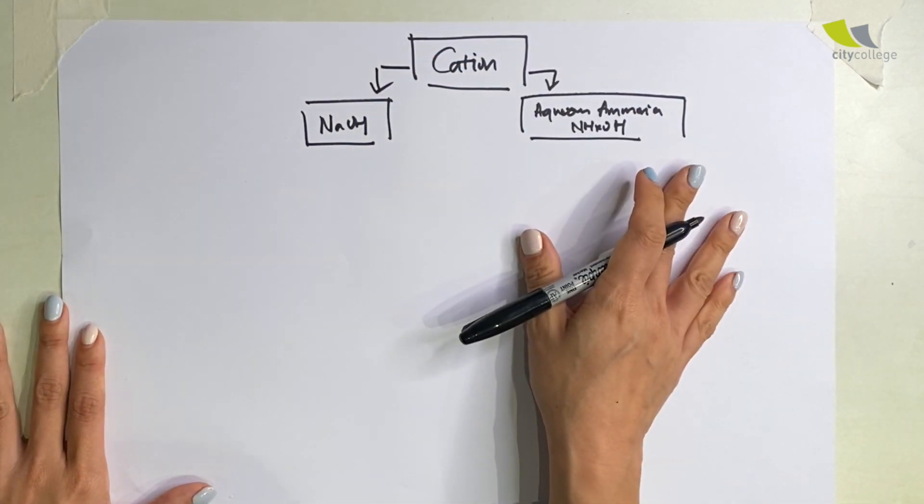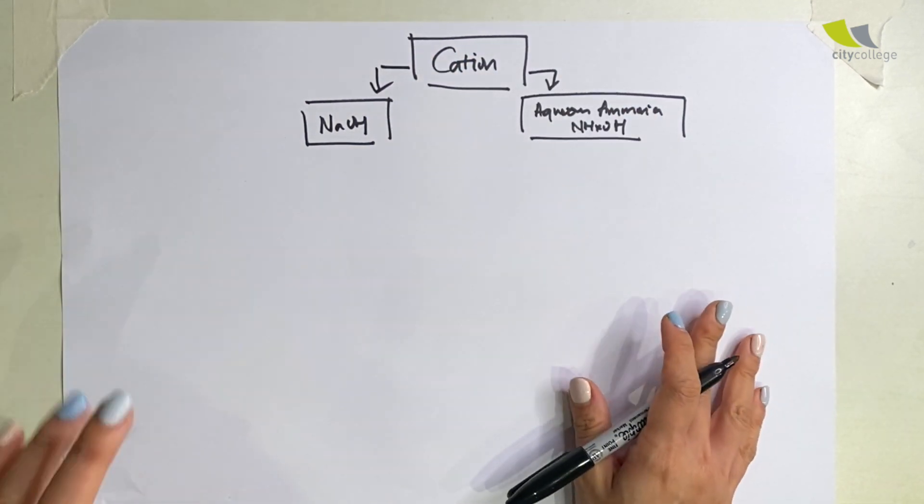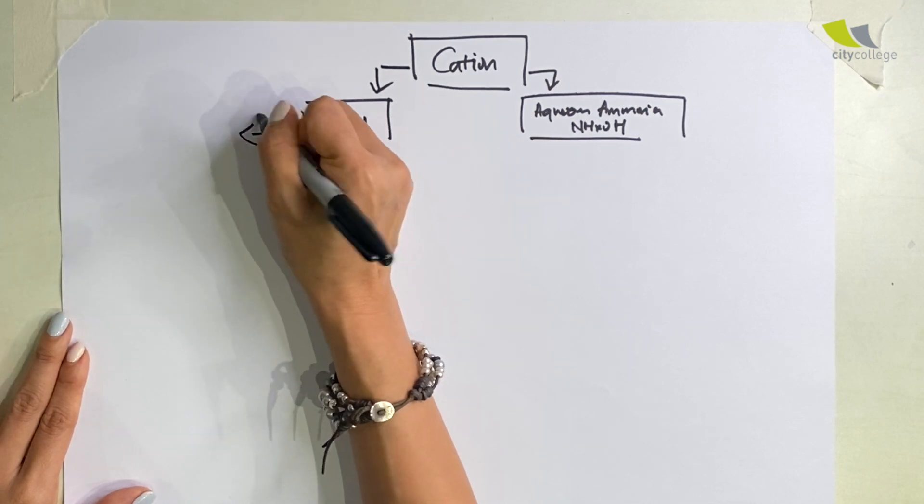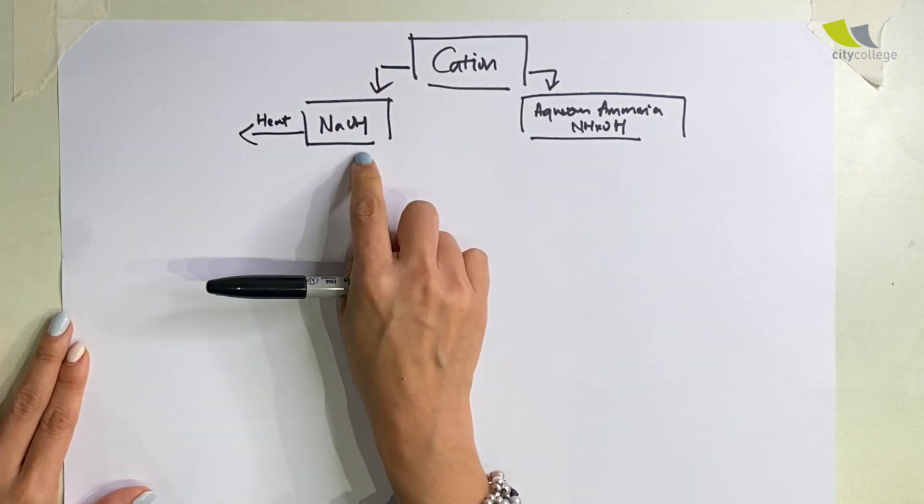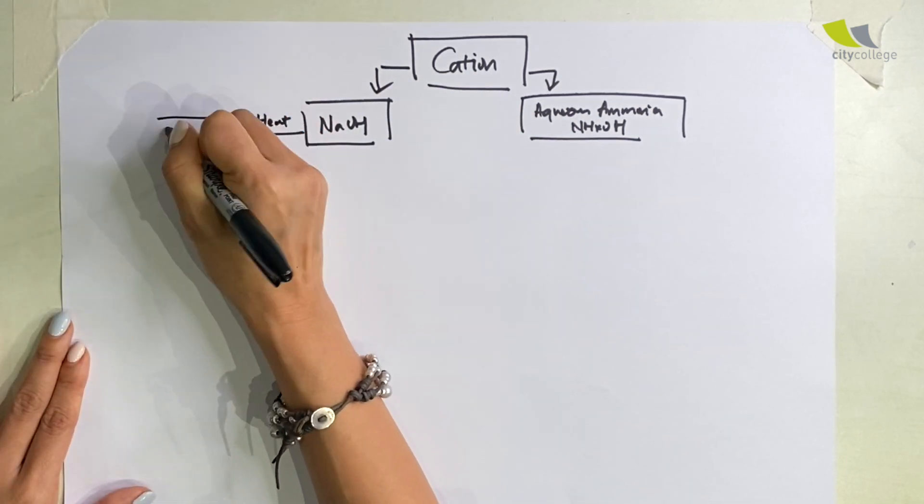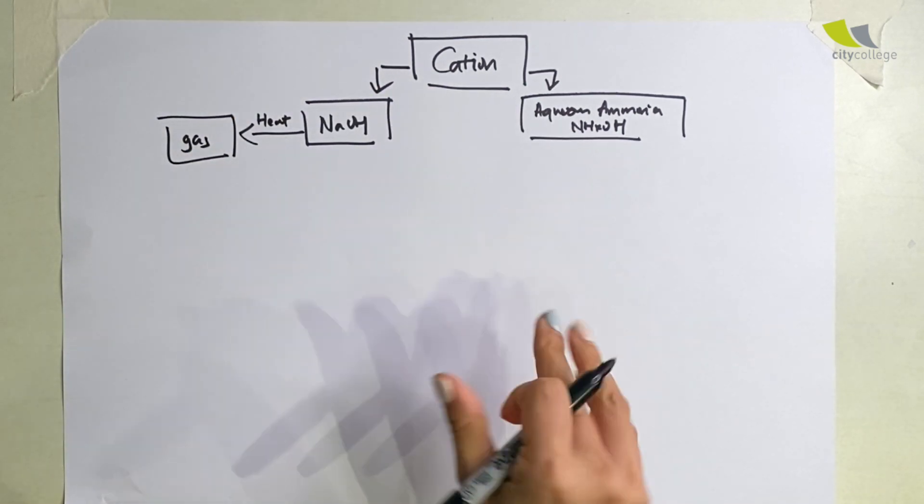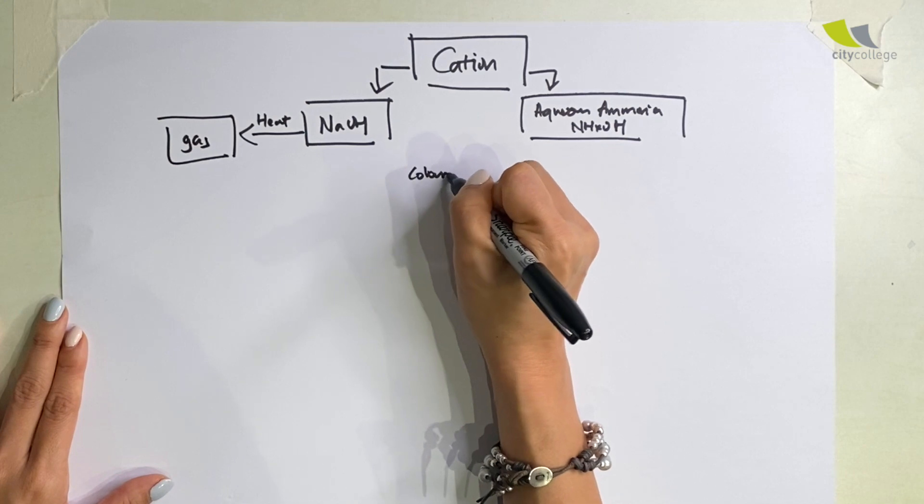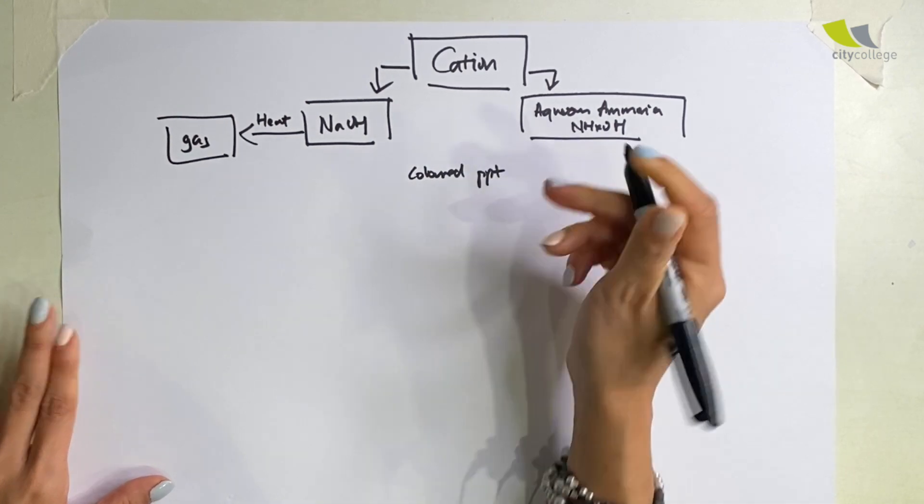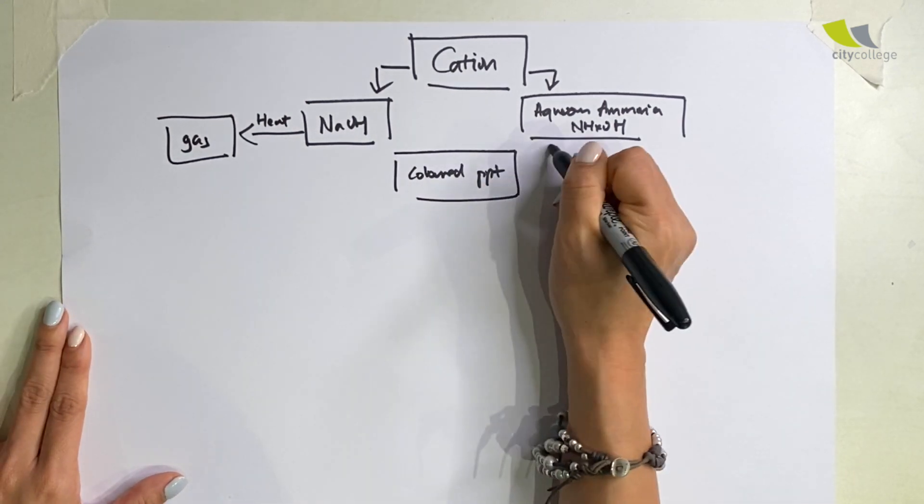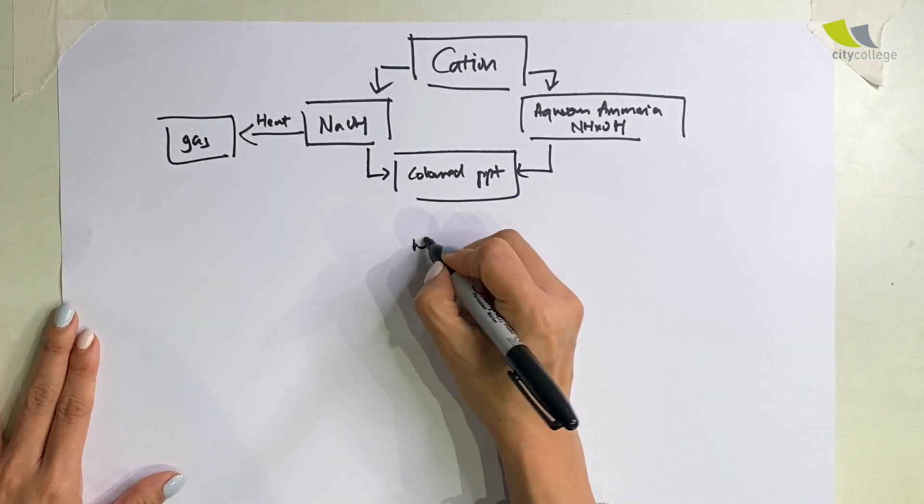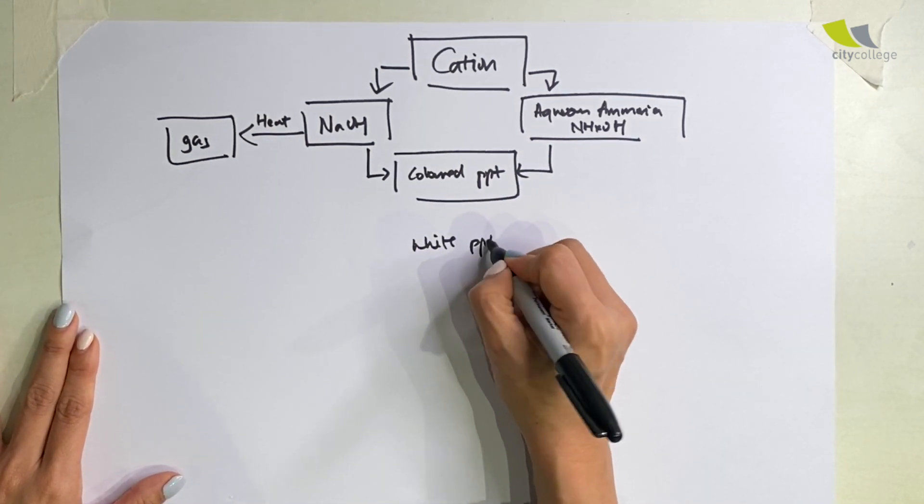I categorize into three portions. The first portion, upon heating after you add NaOH, there's one that will give out a gas. The other two I categorize into colored precipitate and white color precipitate.